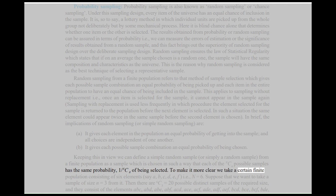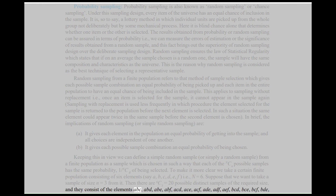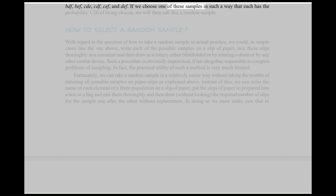To make it more clear, we take a finite population consisting of six elements: a, b, c, d, e, f (N = 6). Suppose we want to take a sample of size n = 3 from it. Then there are 6C3 = 20 possible distinct samples of the required size. We can define a simple random sample as a sample chosen in such a way that each of the 20 possible samples has the same probability — 1/20 — of being selected. If we choose one of these samples in such a way that each has the probability 1/20 of being chosen, we will then call this a random sample.